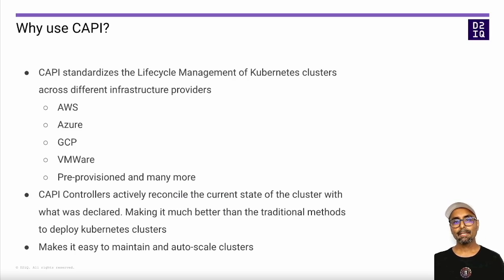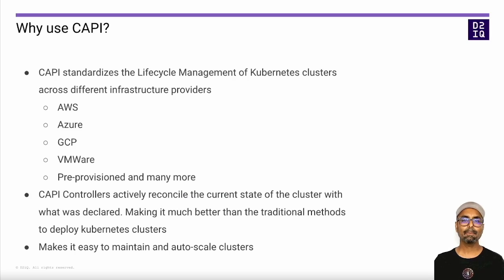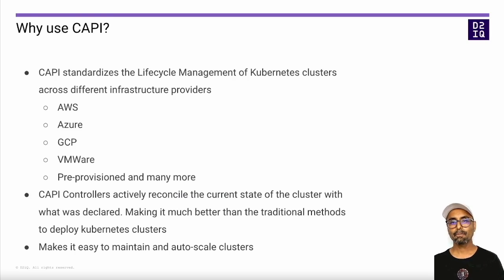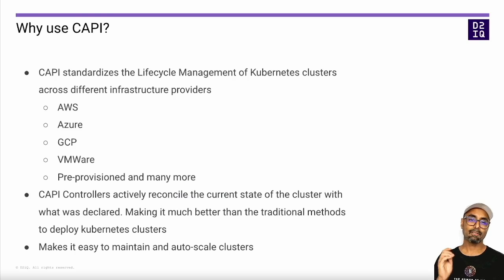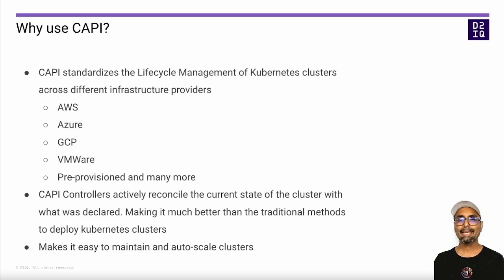Unlike a traditional deployment method that uses an automation tool to provision the infrastructure, CAPI uses a control loop in the form of controllers to actively monitor the deployed workload clusters, reconciling any drifts and ensuring that the current state matches the declared spec. It also makes it easy to perform maintenance and do things like cluster auto-scaling. If you need to replace a node, simply update the Kubernetes custom resource associated with it and you're done.